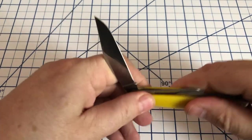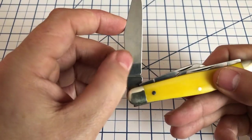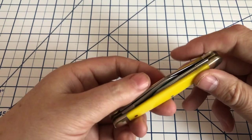Again, carbon steel blades. These will develop a patina over time. You can see there's just a little bit starting here. I really haven't carried this a whole lot yet.